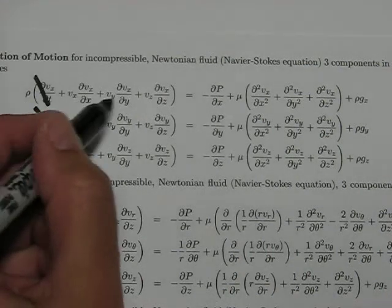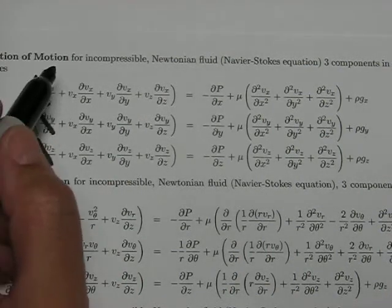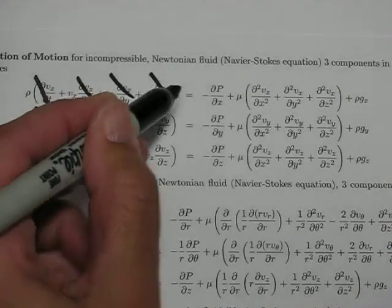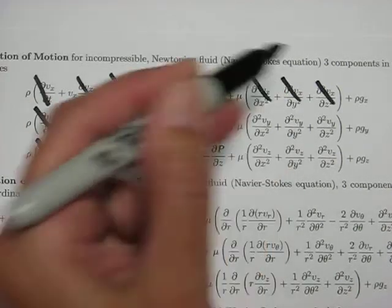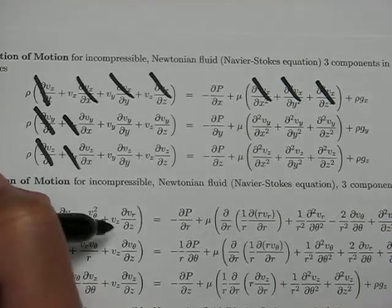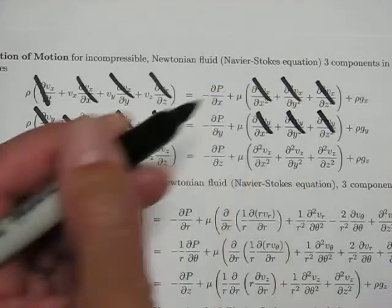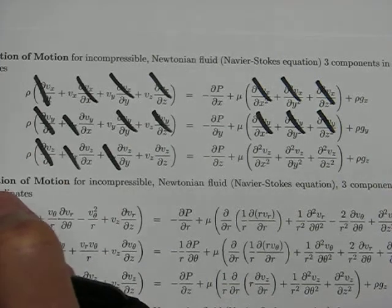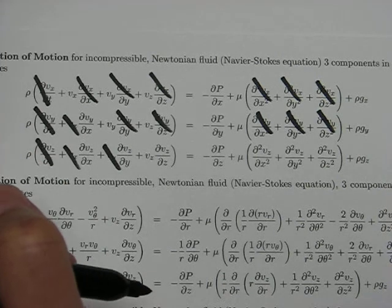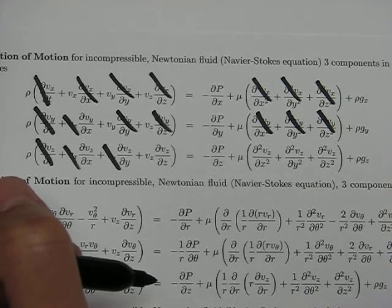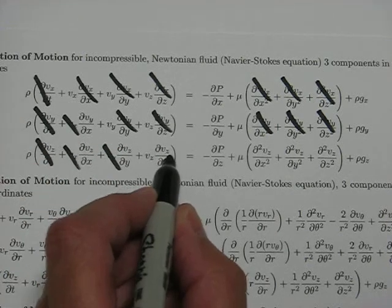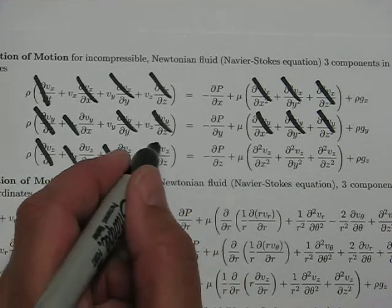Because vx and vy are zero, everything with a vx and everything with a vy is zero. And because from the previous mass balance result, we know dvz dz is zero,